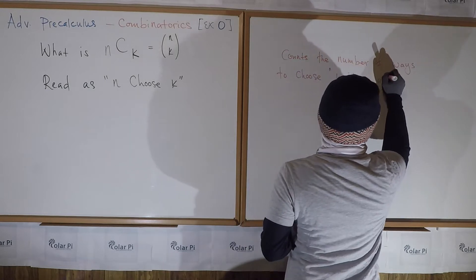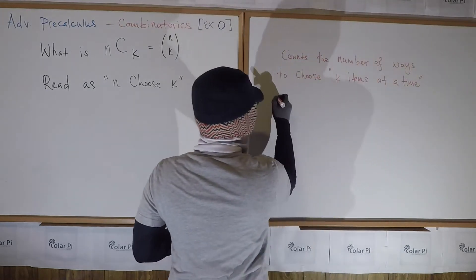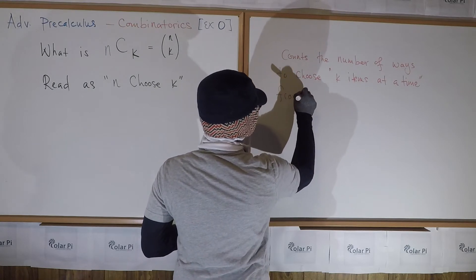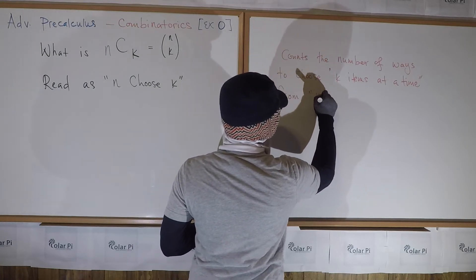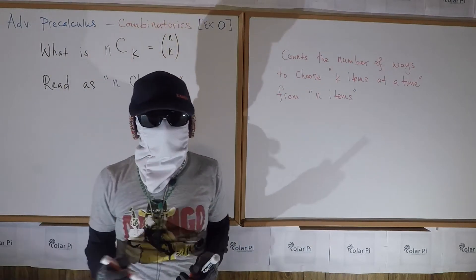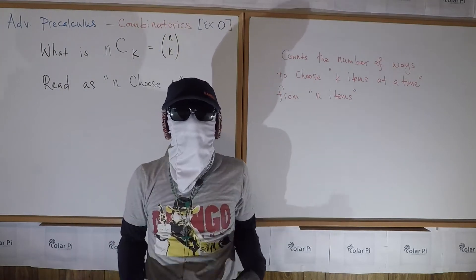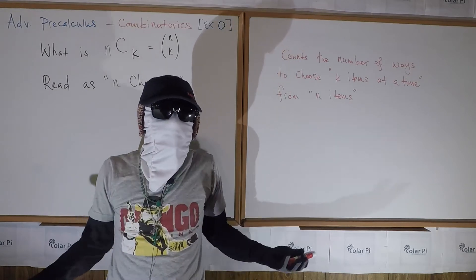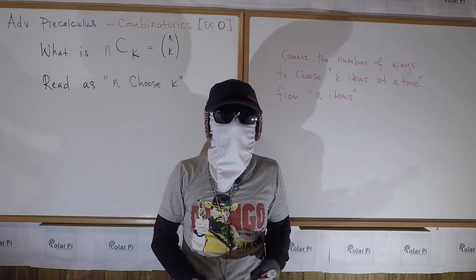k items at a time from n items. And I'm not being vague when I call them items because it could be markers, as I'll demonstrate shortly, or it could be dots as you'll see in example one.